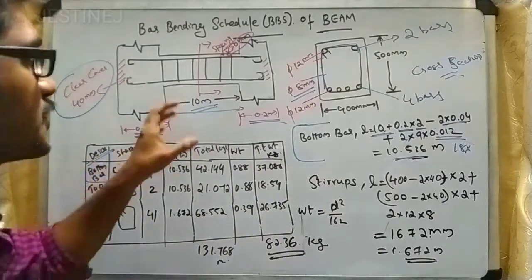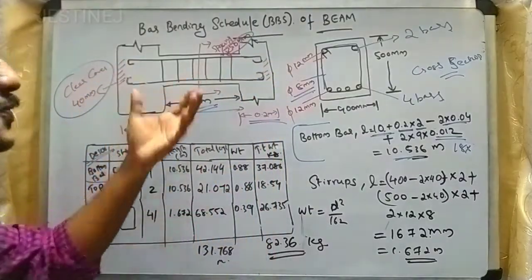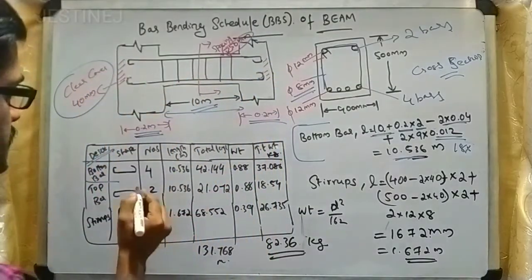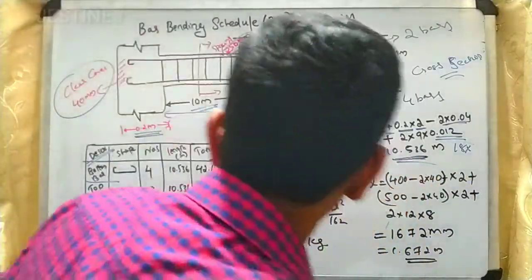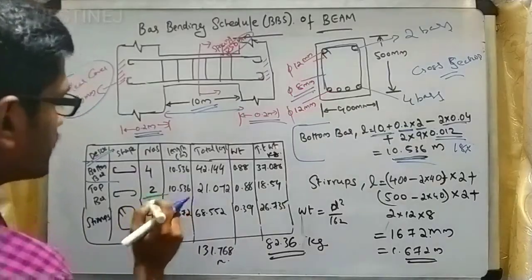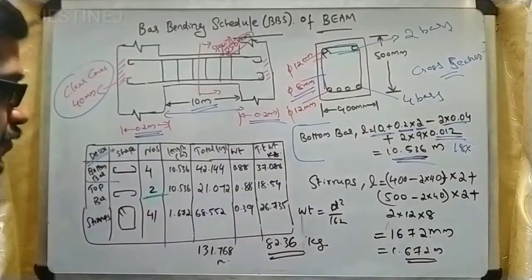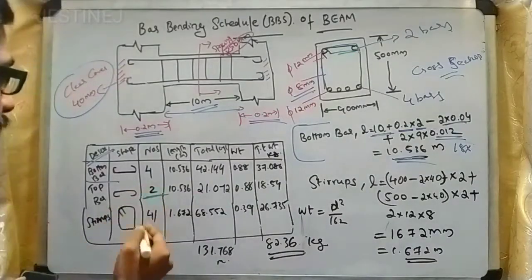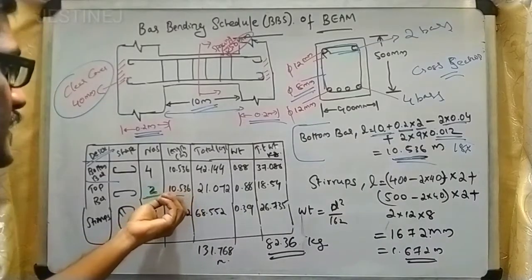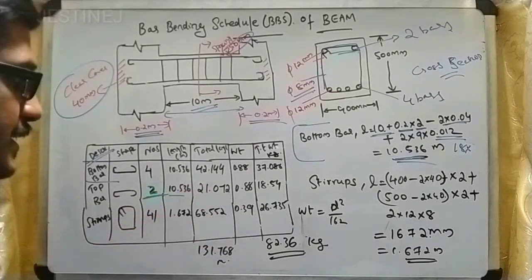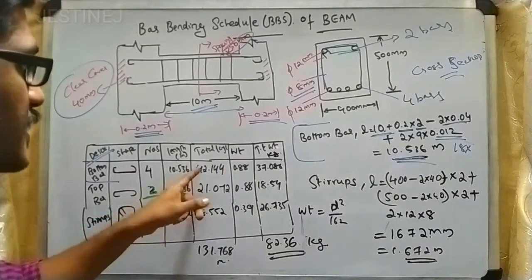The top bar is very similar to the bottom bar, so the individual length will be the same: 10.536 meters. However, the number of bars is less — the top reinforcement has two bars. Multiplying two by 10.536 gives a total length of 21.072 meters. For the bottom bar, four multiplied by 10.536 gives 42.144 meters.